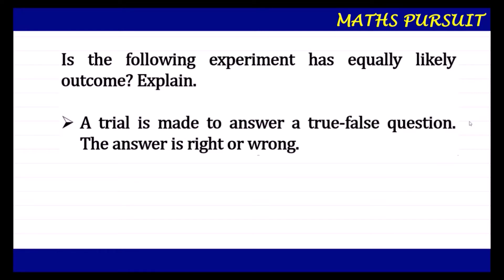Let us analyze the question so that it would be easy to understand whether this particular statement has equally likely outcome or not. We very well know that if there are two things involved, then the probability of happening of any one of them is equally likely. For example, if we toss a coin, there are two things — either head or tail.